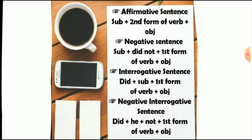The negative sentence is used to negate any idea. For the negative sentence, we use: subject plus 'did' — which is the helping verb — plus 'not' plus the first form of verb. For example, with the word 'work': we will not use 'ed' after the alphabet 'k'. Then we add the object.